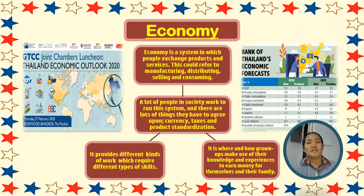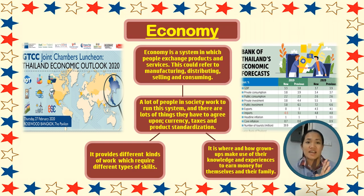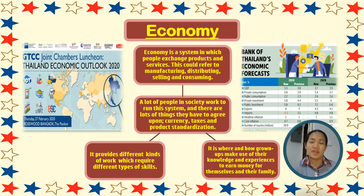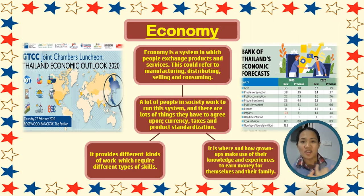So class, the second discussion we are going to have is about economy, which is the fourth social institution in Thailand. So economy is a system in which people exchange products and services. This could refer to manufacturing, distributing, selling, and consuming. So it involves the seller and the consumer, the manufacturer and the producer, and a lot of people — also the people who distribute goods, provide services, sell their products, and the people who use what they sell.